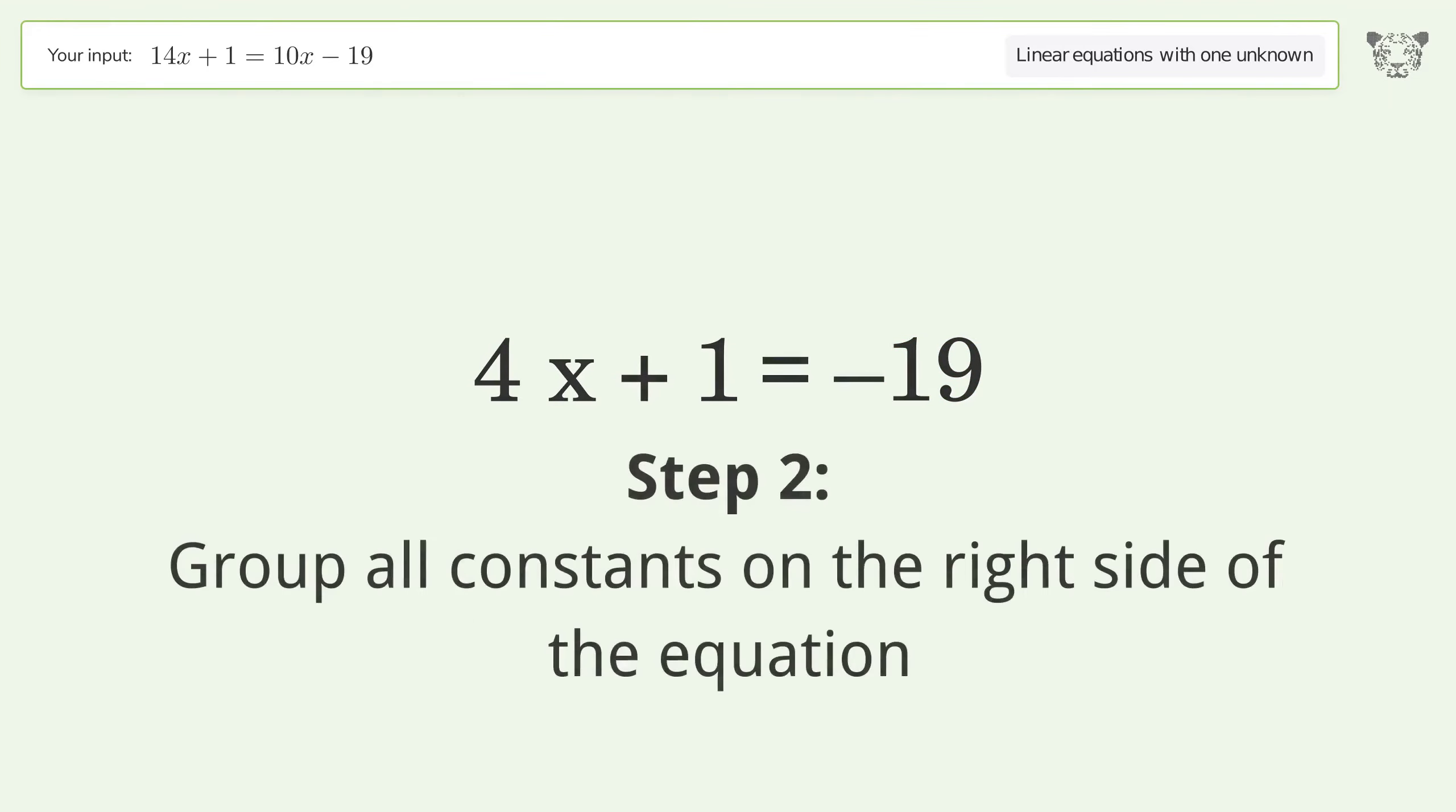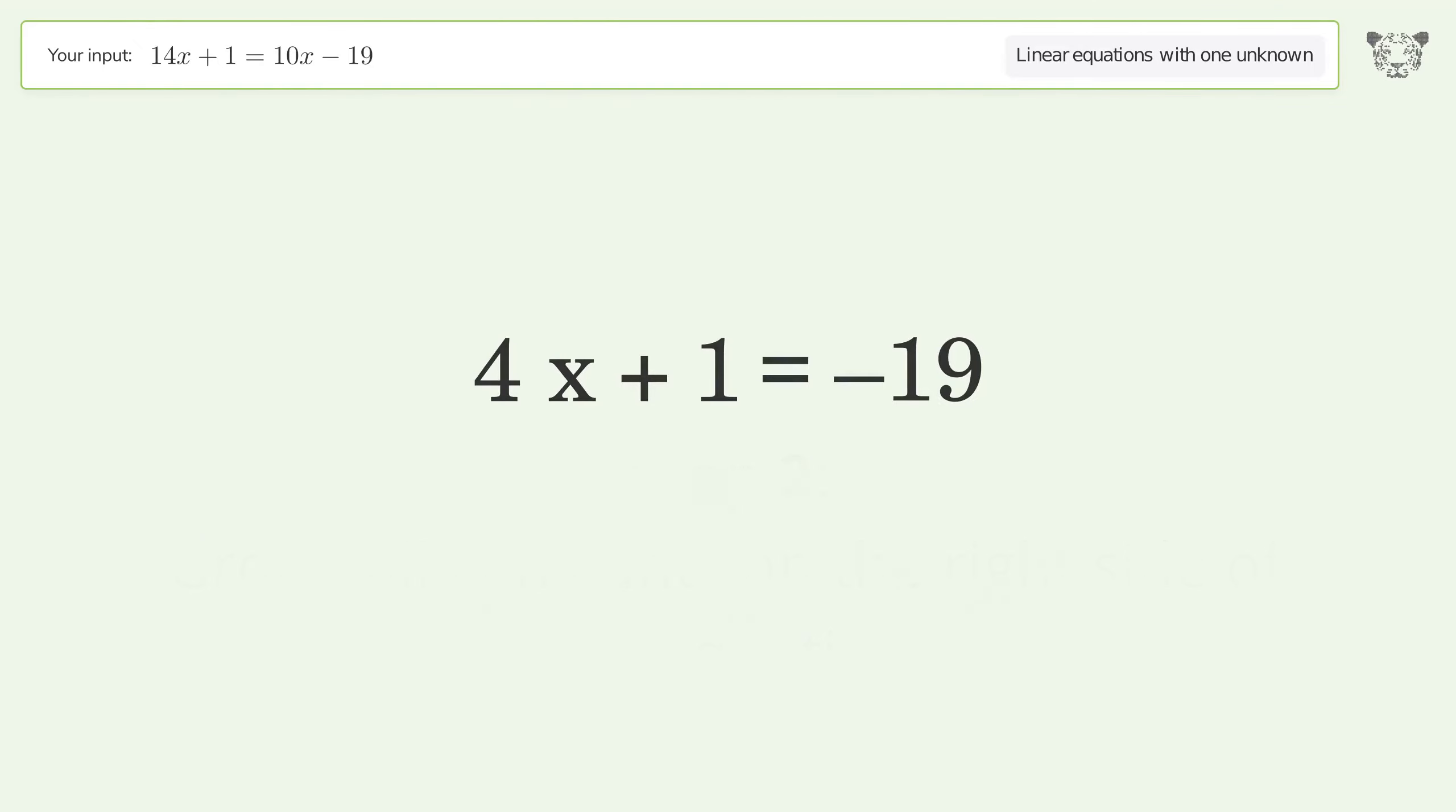Group all constants on the right side of the equation. Subtract 1 from both sides. Simplify the arithmetic.